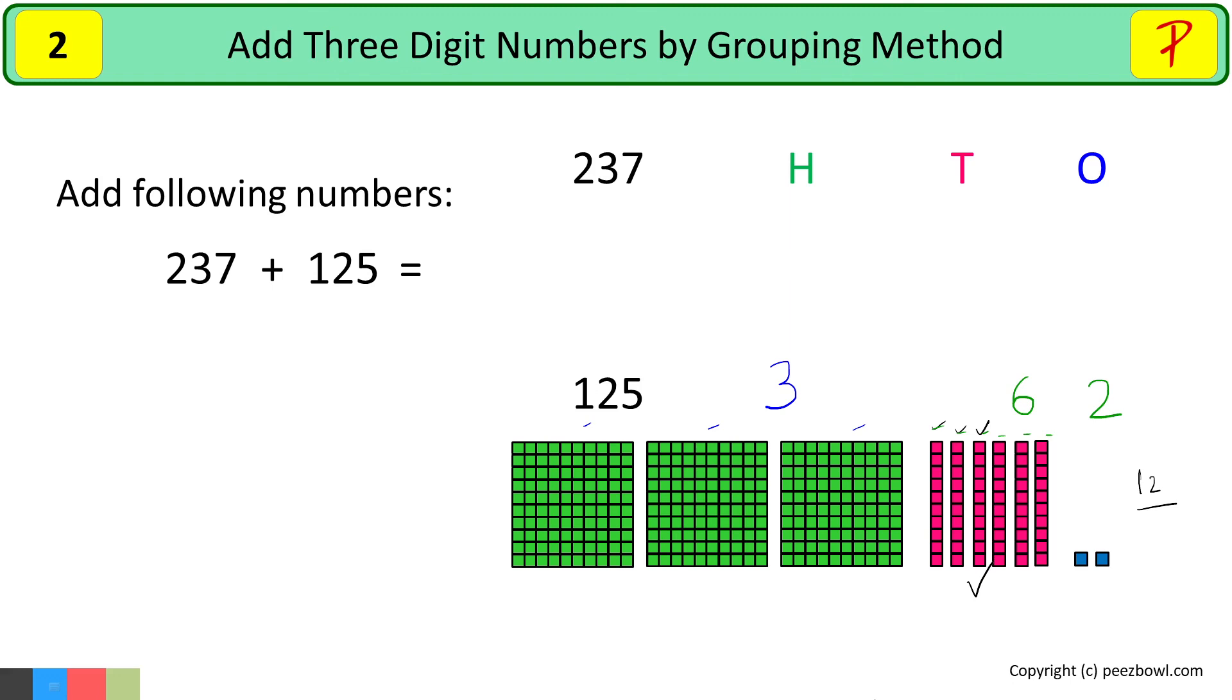Let us see which number we get after adding 237 and 125. So the number we get is 362. I write it here, sum of 237 and 125 is 362.